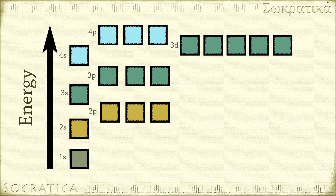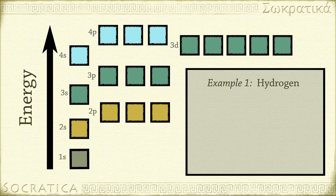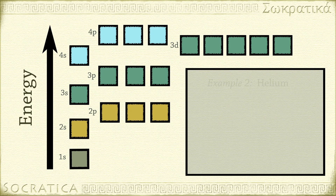Let's see some examples. Hydrogen has one electron, so it goes into the 1s orbital. We write the electron configuration as 1s1. The first number shows the energy level, and the exponent on s shows the number of electrons in the s orbital. Helium has two electrons, so those two electrons both go in the 1s orbital with opposite spins. The electron configuration is written as 1s2.